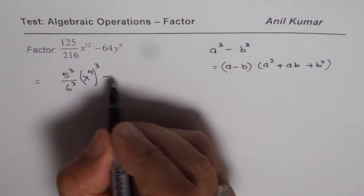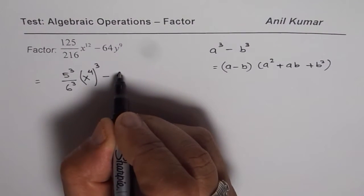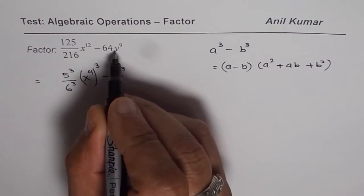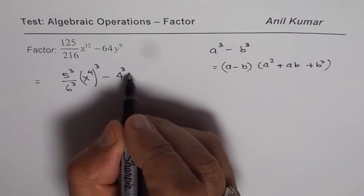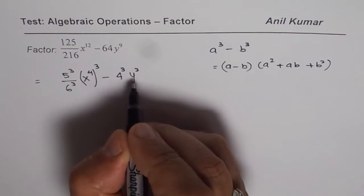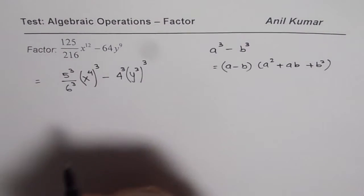64 is 4 cube. So we can write this as 4 cube. y to the power of 9 could be written as y cube and then cube that one.